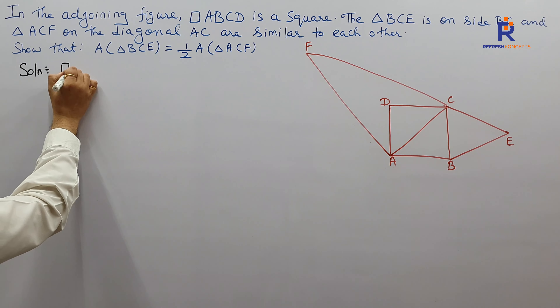Since triangle ACF is similar to triangle BCE — which is given — we can apply the theorem on areas of similar triangles: area of triangle BCE upon area of triangle ACF equals BC squared upon AC squared.